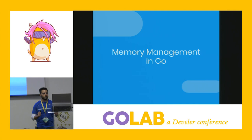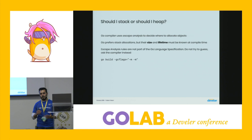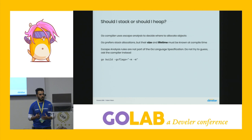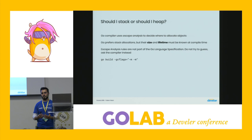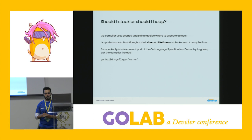Unlike C and C++, when you are writing Go programs you can't explicitly decide where to allocate objects. Go uses an optimization called escape analysis to decide whether to allocate objects on the stack or on the heap. Escape analysis tries its best to locate objects on the stack, since stack allocations are considered cheaper compared to heap allocations. But to do that, the size and lifetime of the object must be known at compile time. Escape analysis rules are not part of the Go language specification, so instead of guessing — even if there are common patterns that lead to heap allocations — it is better to ask the compiler using this command.